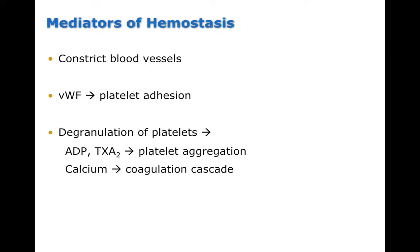Some mediators of hemostasis include vasoconstriction after a wound rupture, which limits blood loss. Constricting blood vessels and creating vasospasms also produces turbulence in blood, making it more likely to clot. Von Willebrand factor on the outside of platelets is involved in adhesion of platelets to exposed tissue. Once platelets adhere through von Willebrand factor, degranulation occurs — releasing ADP, thromboxane A2, and calcium, all of which play a role in the coagulation cascade.